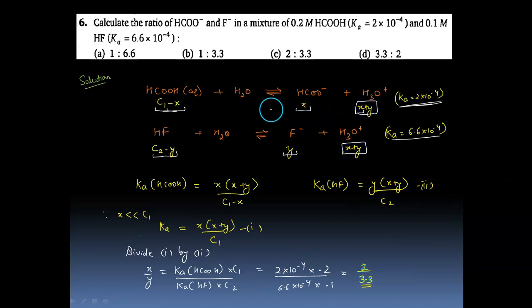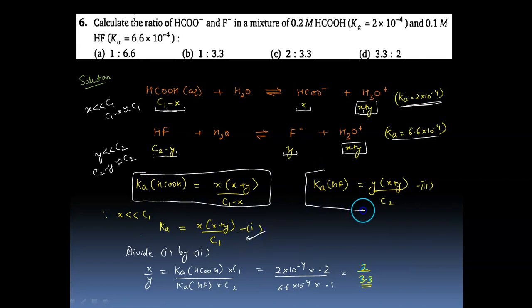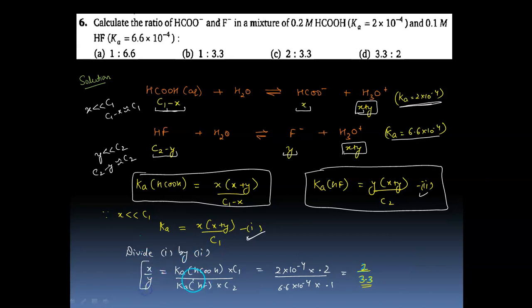Since X is much less than C₁, we approximate C₁−X ≈ C₁. Similarly, since Y is much less than C₂, we approximate C₂−Y ≈ C₂. Writing the Ka expression for formic acid gives one equation; writing the Ka expression for HF gives another. Dividing equation one by equation two, we get X/Y, which equals (Ka_formic × C_formic) / (Ka_HF × C_HF). Substituting the values,